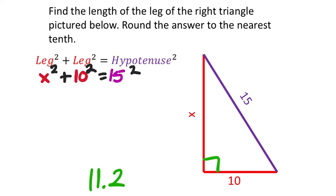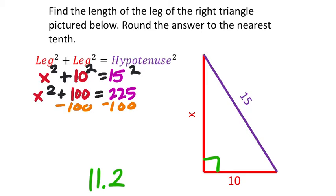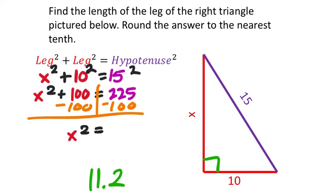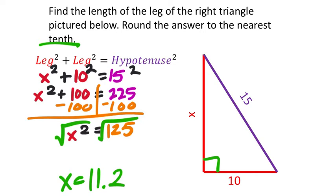Evaluating: 10 squared is 100, and 15 squared is 225. So x squared plus 100 equals 225. Subtracting 100 from both sides gives x squared equals 125. Square rooting both sides gives x equals approximately 11.2 — more precisely 11.18033989, but rounded to the nearest tenth it's 11.2. Pay attention, because on the homework they sometimes change the rounding place.